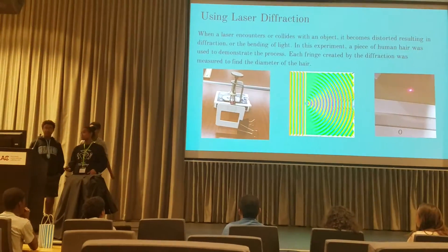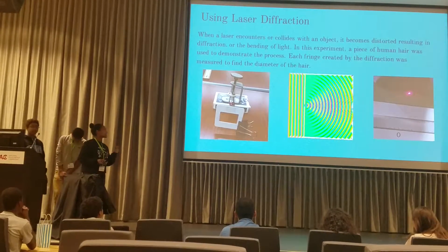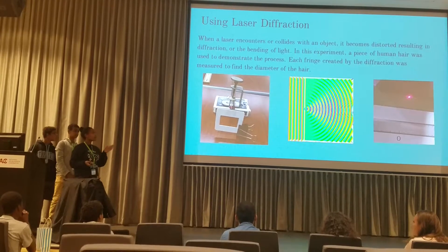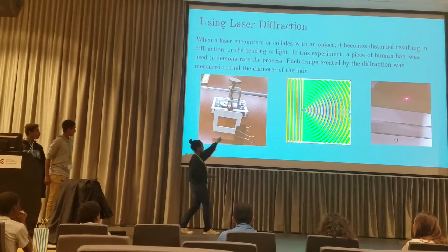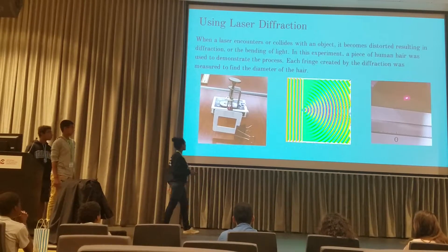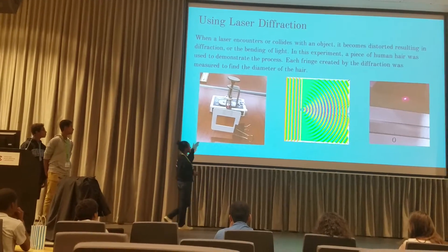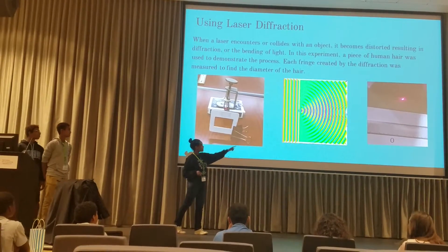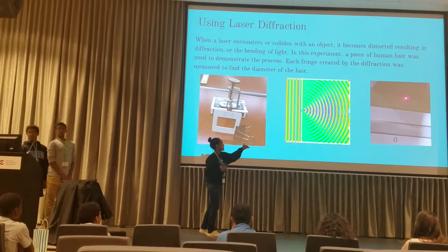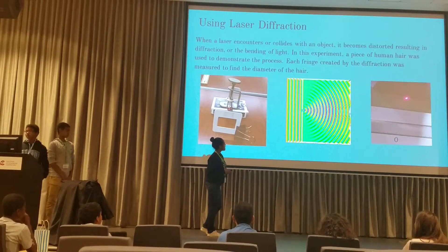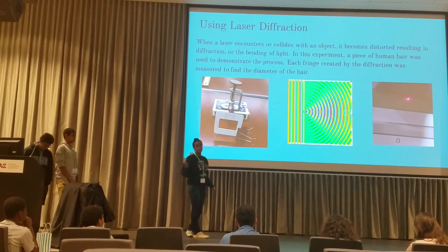One of the measurements we used was a laser, and we used that to measure the diffraction. Diffraction is caused when a laser collides with an object. You can see over here we have a piece of hair — that's where the light is — and it went through that and created that image over there. Each line created — there are like three lines on the right and three on the left — those are called fringes, and we basically measured the distance between each fringe to measure the structure.